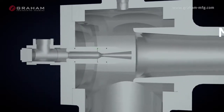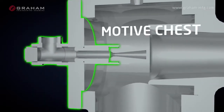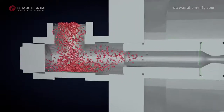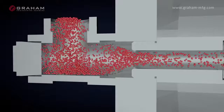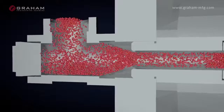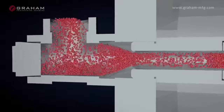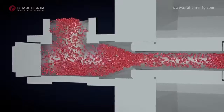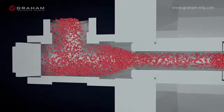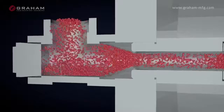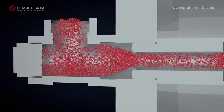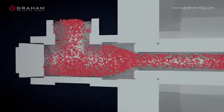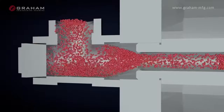The first component is the motive chest. This is where the motive fluid enters the ejector. In our case, and most cases for Graham equipment, the motive fluid is steam. However, it can be any fluid that is at a higher pressure than the ejector is trying to compress to.